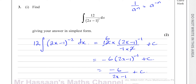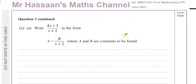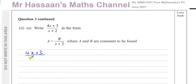Now part 2. It's telling us to write the algebraic fraction (4x+3)/(x+2) in the form a plus b over (x+2). This is an improper fraction because the order of the numerator and denominator are equal. When the order of the numerator is greater than or equal to the order of the denominator, it's an improper algebraic fraction and can be expressed as a mixed number. There are a number of ways to do this — one simple approach is by rewriting the numerator.